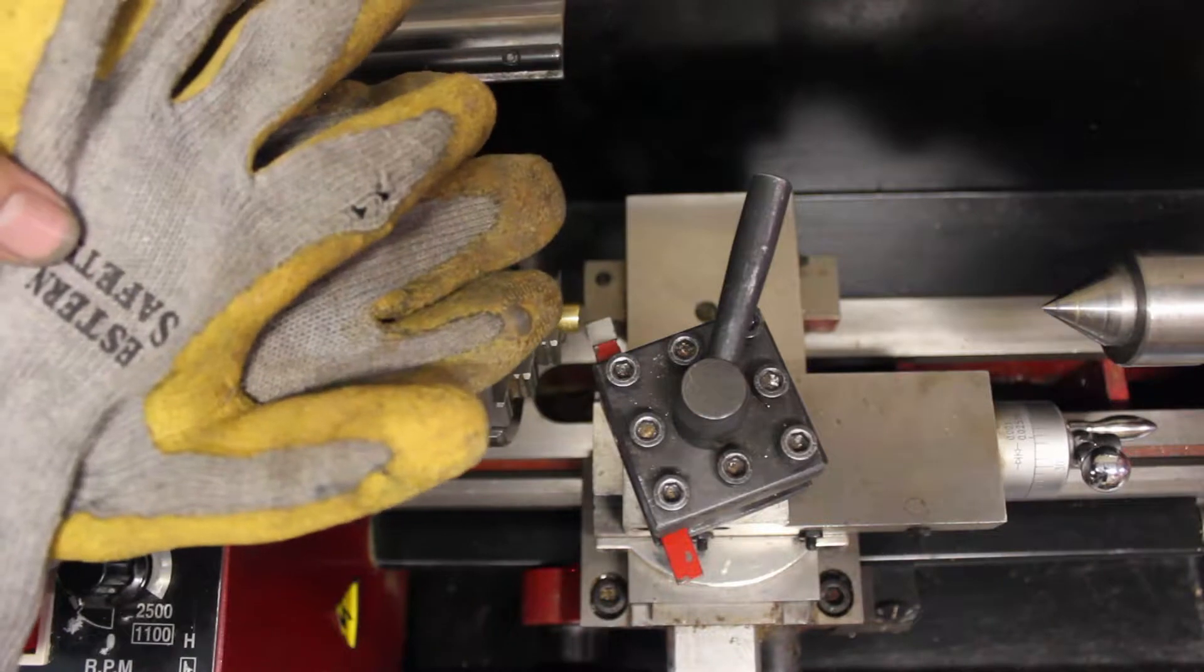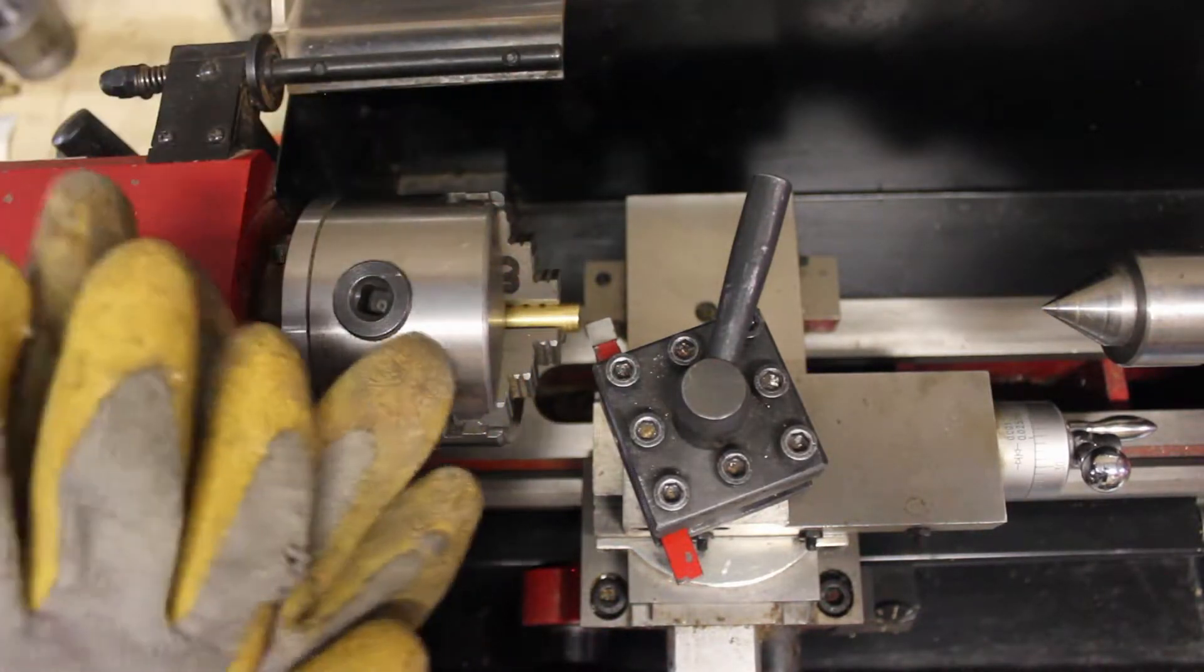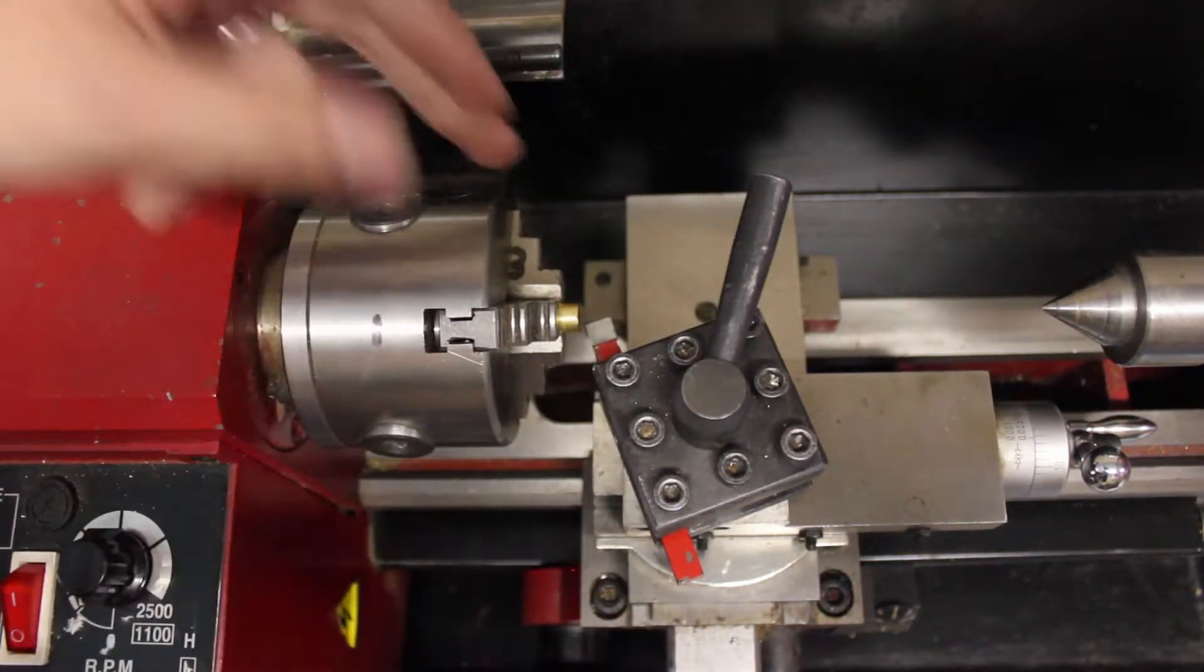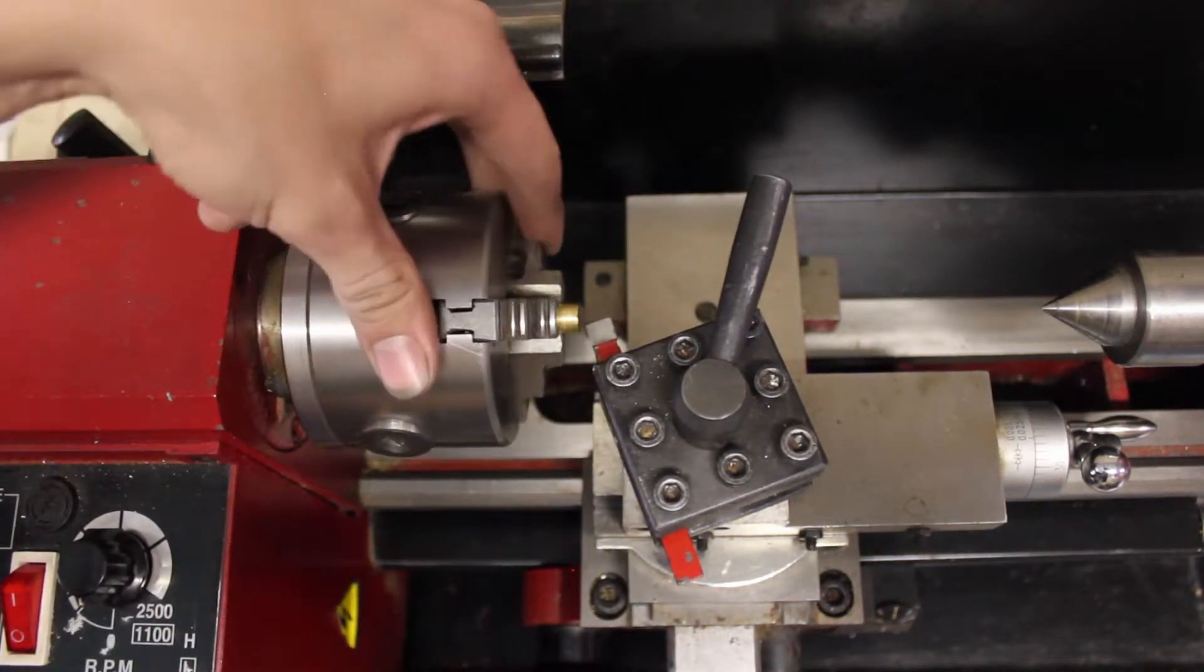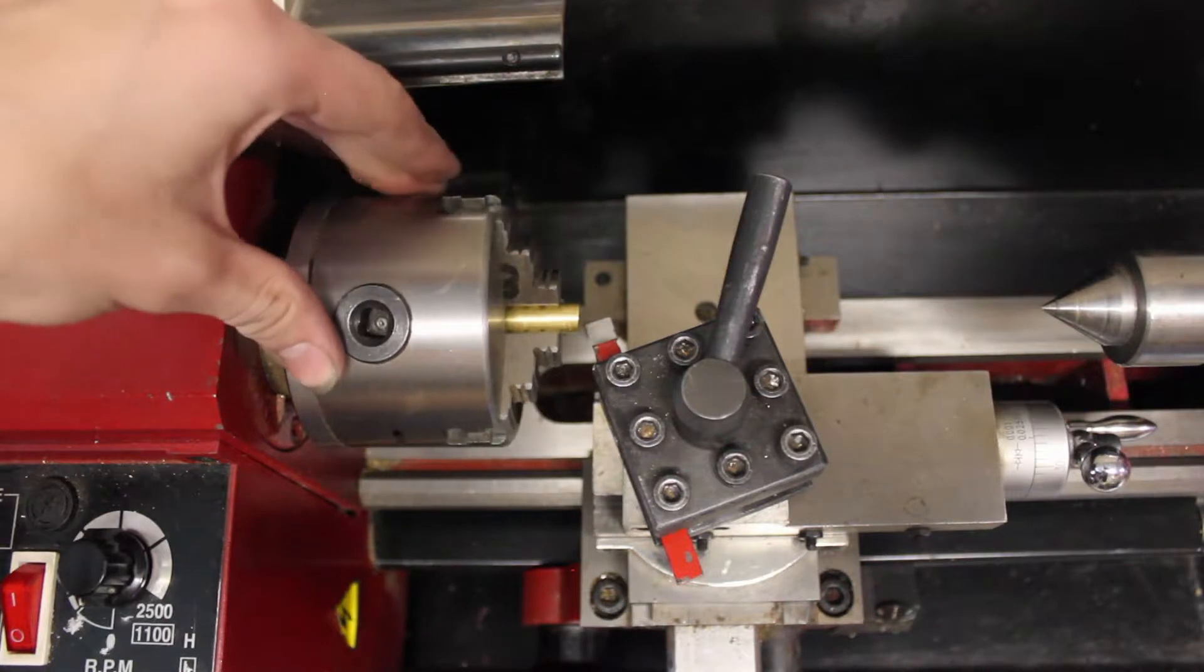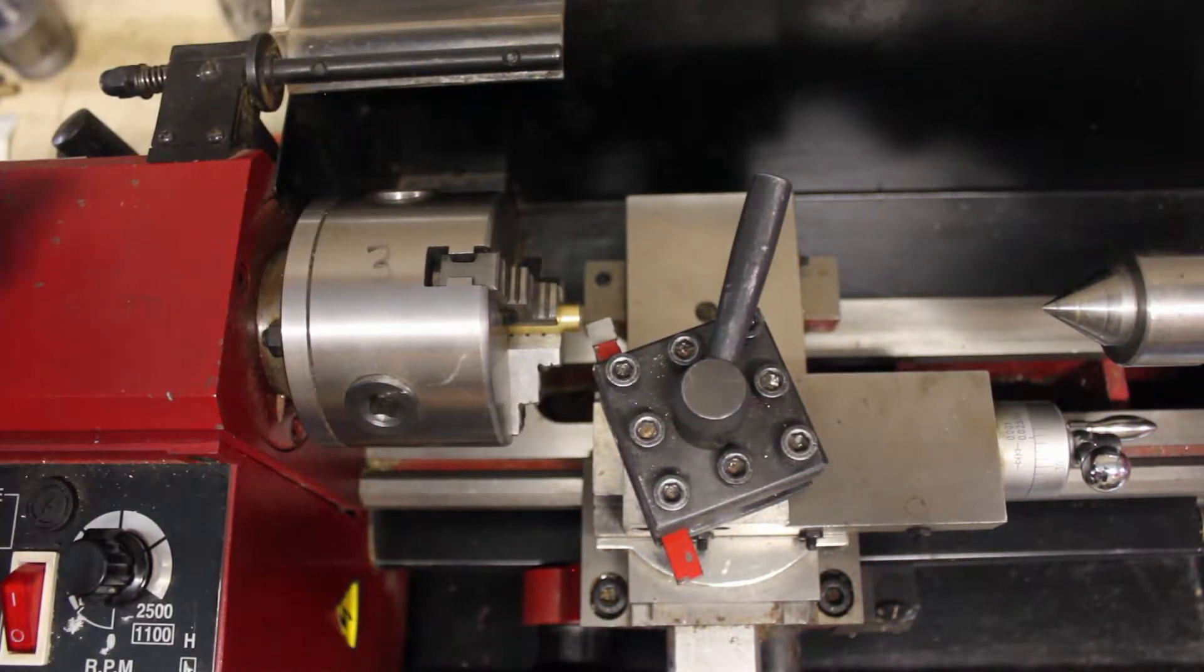Some people wear gloves when you're working, but this is a bad idea on a lathe or a mill because if your glove gets caught in the chuck, it'll pull it in and you won't be able to get your hand out of the glove fast enough before it pulls your hand into the spindle. Now this machine might not have enough power to do that, but a lot bigger machines will definitely pull your hand in and do a lot of damage.